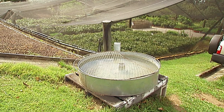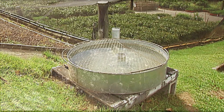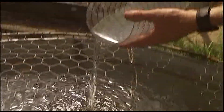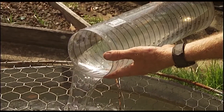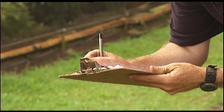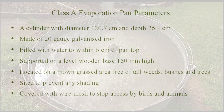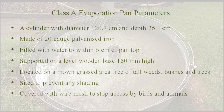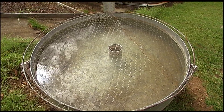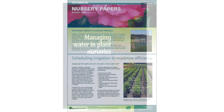A class A evaporation pan is a simple method of obtaining reliable and consistent information on daily evaporation. The previous day's evaporation value can be used to calculate and set the irrigation volume for the day. A class A evaporation pan has specific construction and location parameters. The evaporation data is normally measured daily at 9am, and it is important that readings and refilling of the pan occur regularly at this time.